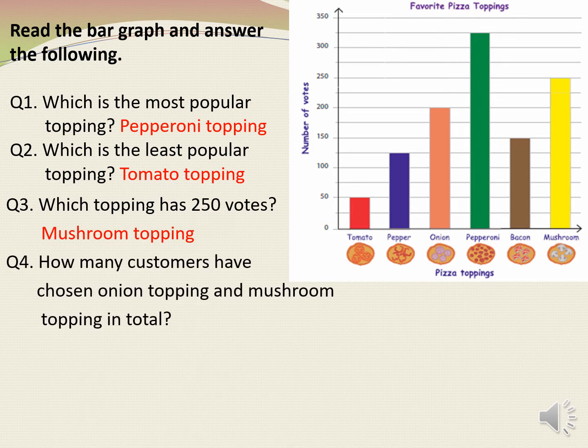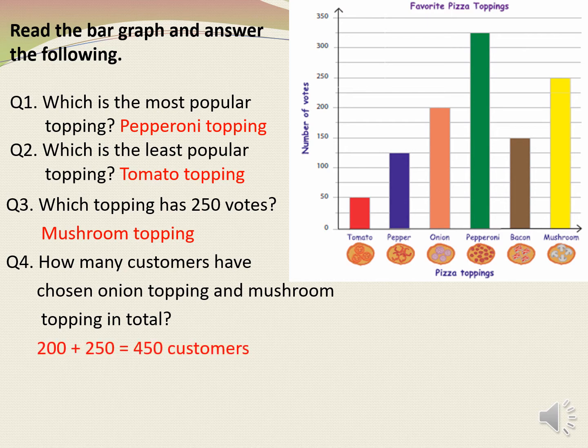Next question: how many customers have chosen onion topping and mushroom topping in total? In total means adding up. So we are going to add onion topping and mushroom topping votes. Onion topping is liked by 200 customers and mushroom topping is liked by 250 customers. So 200 plus 250 is equal to 450 customers.